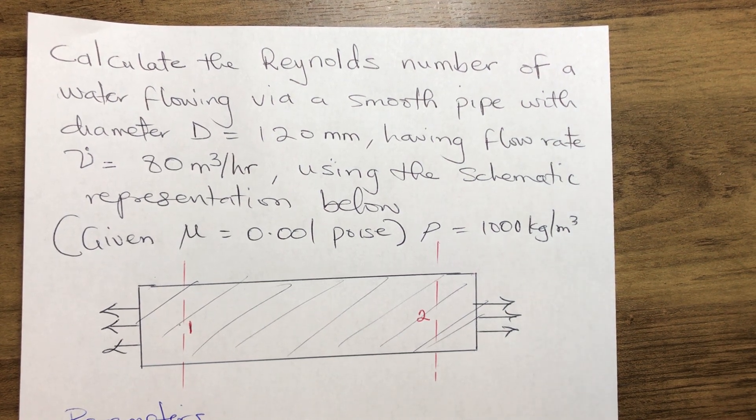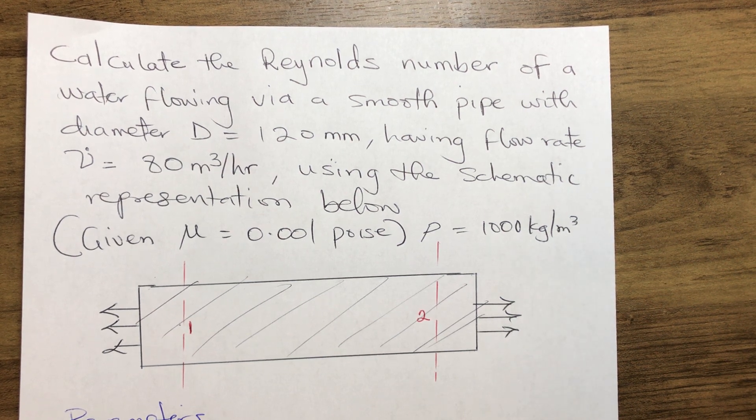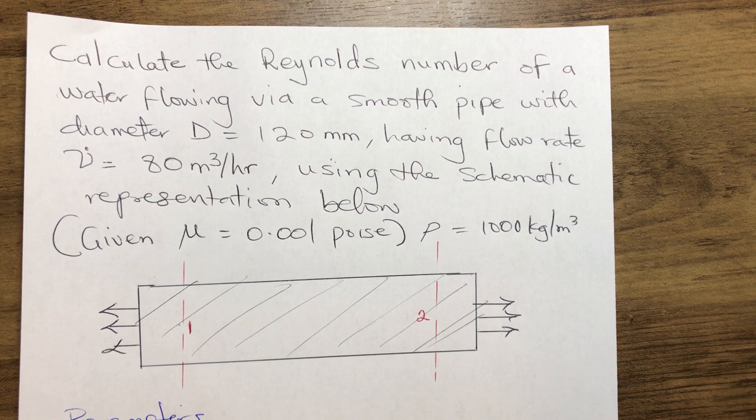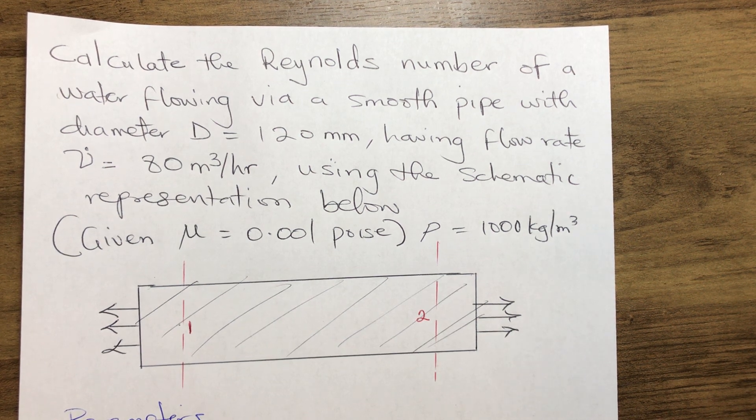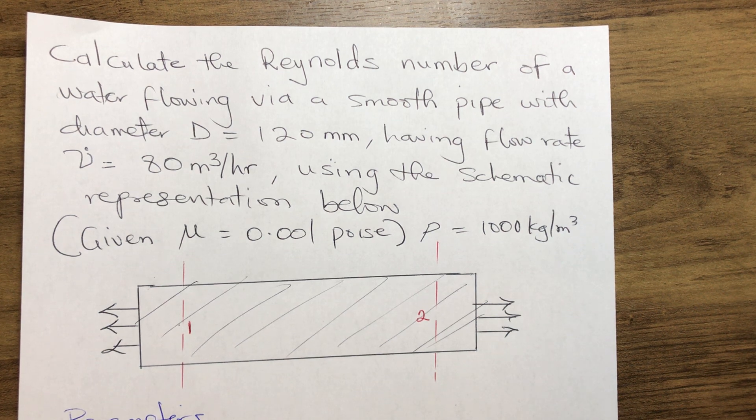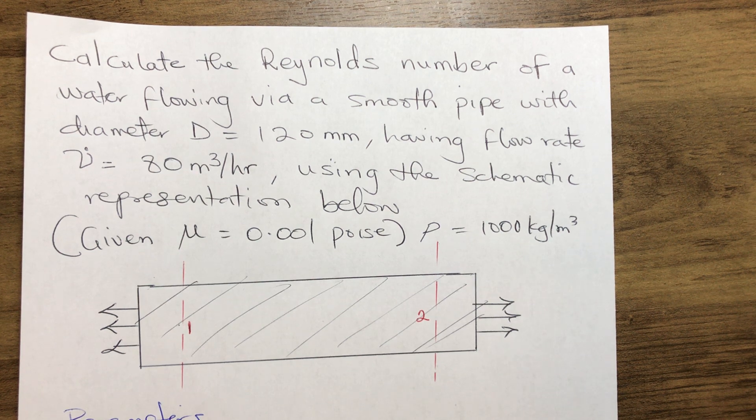Let's read through our question: Calculate the Reynolds number of water flowing via a smooth pipe with diameter 120 millimeters, having flow rate 80 cubic meters per hour, using the schematic representation below. Given: viscosity of water μ = 0.001 poise, and density ρ = 1000 kg/m³.